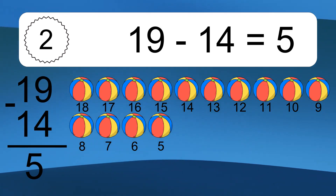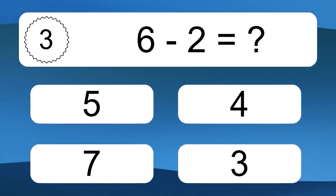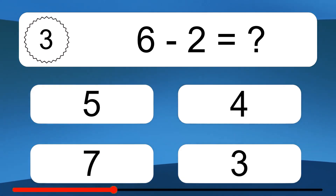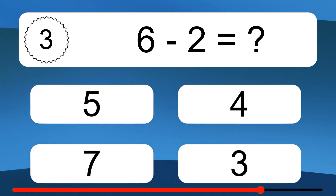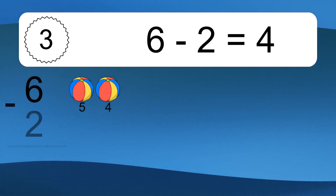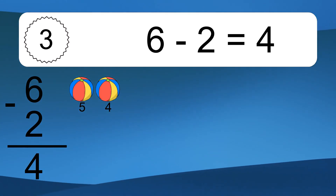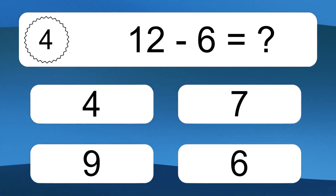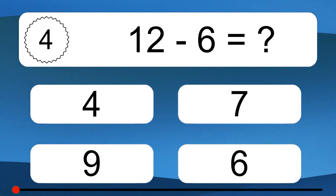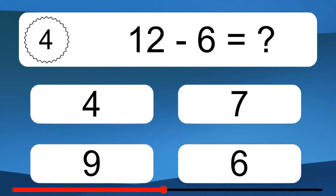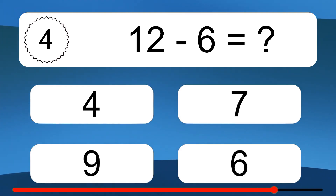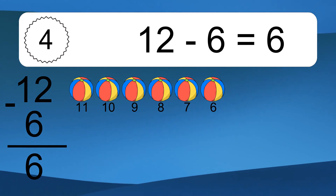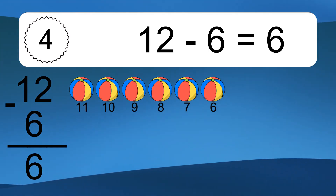6 minus 2 equals what? 6 minus 2 equals 4. Let's count it: 5, 4. 12 minus 6 equals what? 12 minus 6 equals 6. Let's count it: 11, 10, 9, 8, 7, 6.